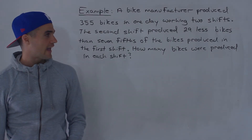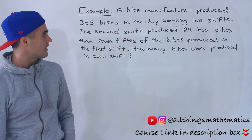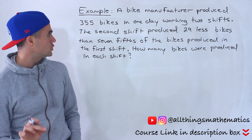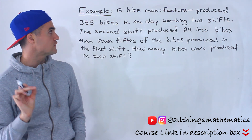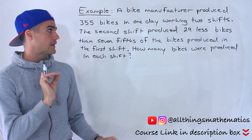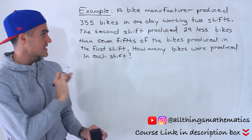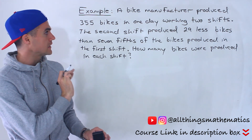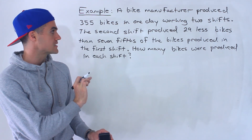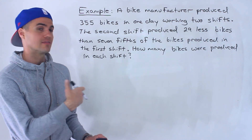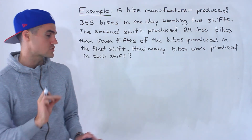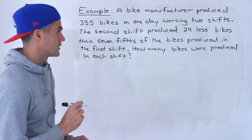What's up everyone? Patrick here. In this next question, we're told that a bike manufacturer produced 355 bikes in one day working two different shifts. The second shift produced 29 less bikes than seven-fifths of the bikes produced in the first shift. We have to figure out how many bikes were produced in each shift.